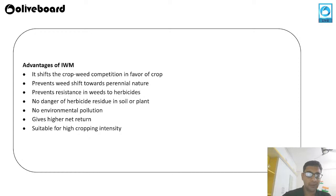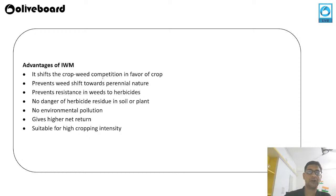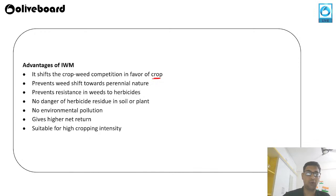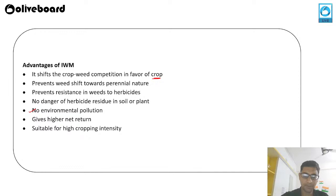Advantages of integrated weed management: it shifts the crop-weed competition in favor of the crop; prevents the weed from shifting to a perennial nature; helps in prevention of resistance to herbicides; there is no danger of herbicide residue in the soil or plant; no environmental pollution; higher net returns; suitable for high cropping intensity; and protects soil fertility.